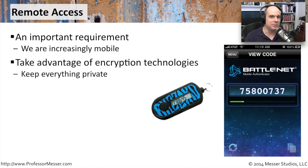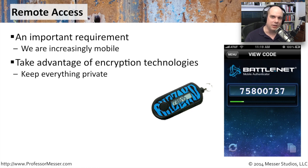So remote access becomes a very, very important component of this. Whenever you start looking at how you're going to get people to communicate back securely into your network, you're almost always going to use some type of encryption technology. In later videos, we're going to talk about some very specific methods of being able to authenticate and encrypt traffic, especially over a remote access piece. Obviously, encryption is incredibly important because you have no idea who on the internet might have access to this data as it's flowing through.